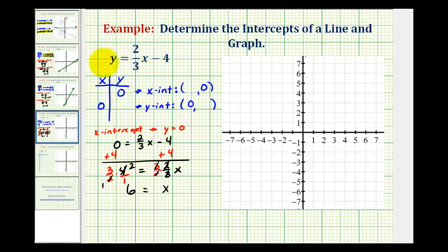So, when y is equal to zero, x is equal to six. So, our x intercept is the point six, zero.